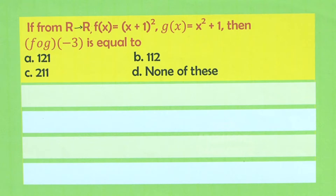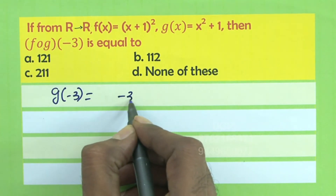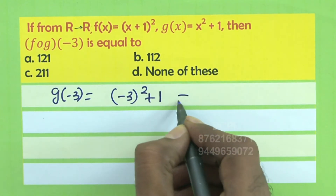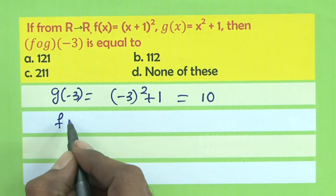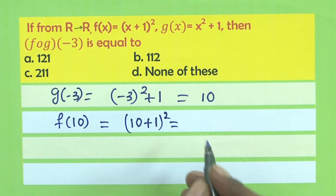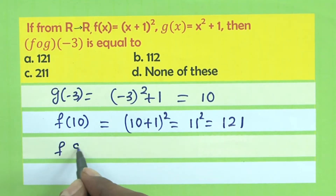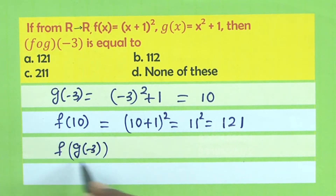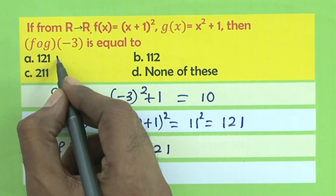If f(x) = (x+1)² and g(x) = x²+1, then what is f(g(-3))? First, g(-3) = (-3)²+1 = 9+1 = 10. Then f(10) = (10+1)² = 11² = 121. So f(g(-3)) = 121, and option A is correct.